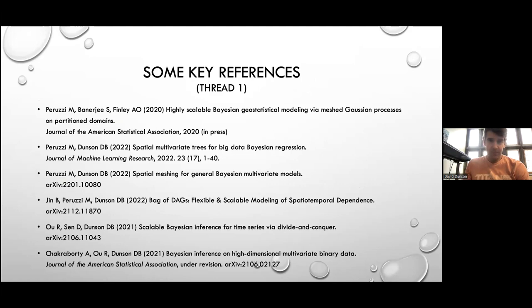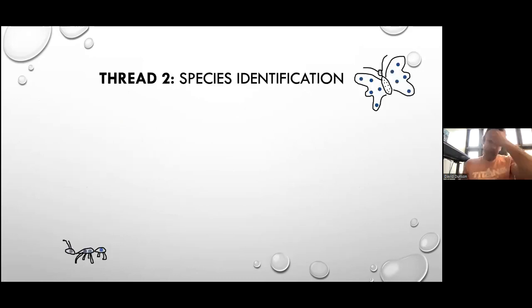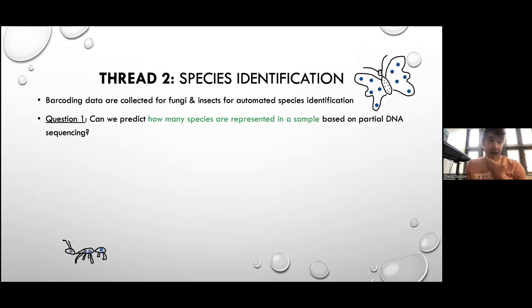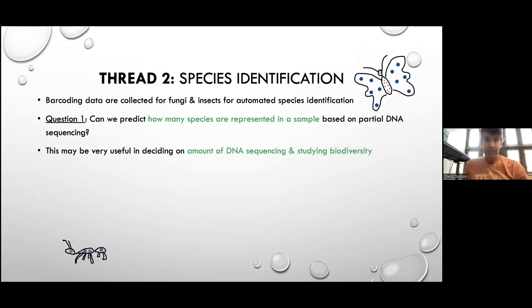In the species identification thread, we've made a lot of progress. We tend to get barcoding data — as Otso described for fungi and insects — and we'd like to automate species identification based on nucleotide sequence data. Question one: can we predict how many species are represented in a sample based on partial DNA sequencing? This might be very useful in deciding how much more sequencing we should do or providing better predictions of the number of species in a sample based on limited depth sampling — with uncertainty intervals — the number of species that would have been present had we done complete sequencing.